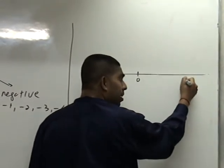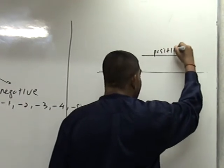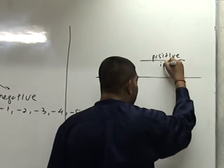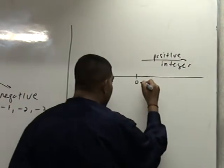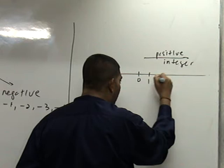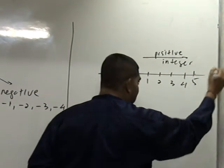Alright? If I move to the right, it points to positive integer. Moving to the right, it points to what? Positive integer. So from here, zero, then we have what? 1, 2, 3, 4, and so on, 5, etc.